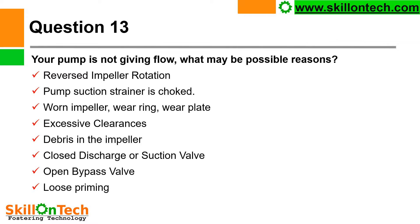Open bypass valve: if the bypass valve is open, flow will come back to the suction through the bypass line and you will not get sufficient flow in the discharge pipeline. Loss of priming: if your pump is losing priming again and again, air inside the casing or suction line is being compressed repeatedly and the pump will not give you the appropriate flow it was designed for.